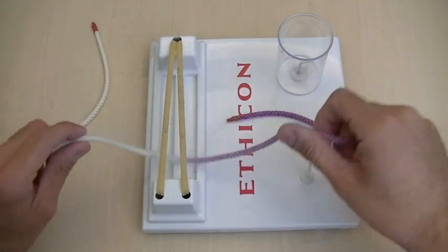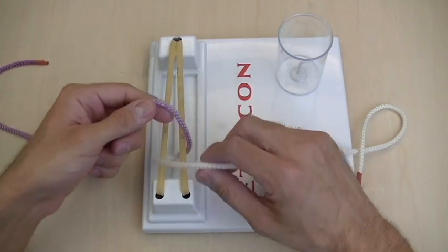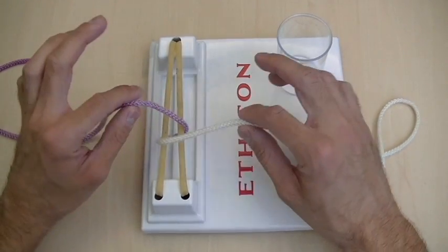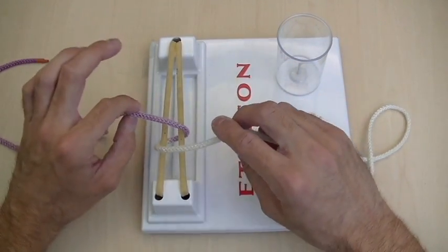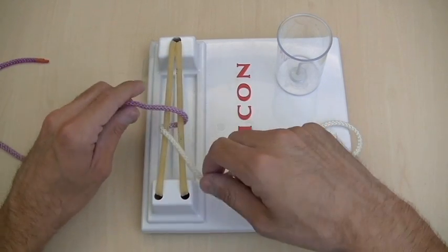Tying a square knot with two hands is very simple as long as you think about how you're laying down your knots. You want to start with the sutures crossed so that when you lay down the first throw, your hand is not blocking the knot and you can make sure you're laying it down squarely.